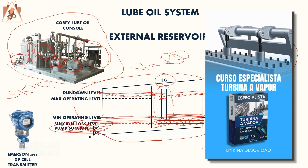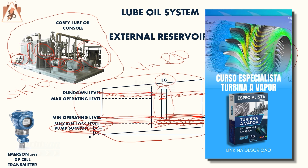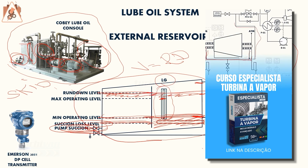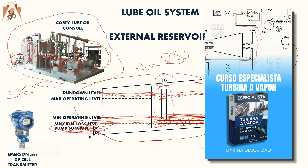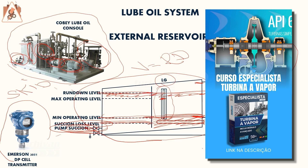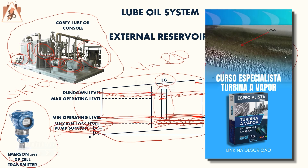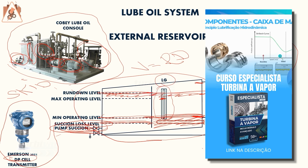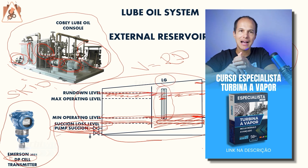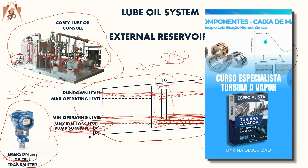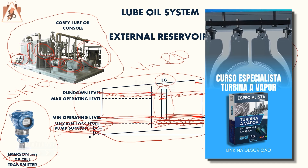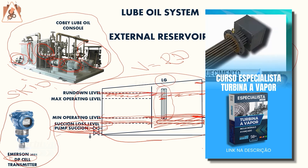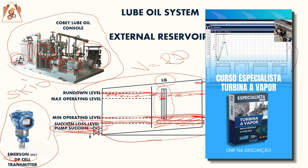For remote level measurement, a level transmitter is used. The pressure difference (delta P) between the top and bottom of the tank generates the level reading. An Emerson DP cell transmitter reads both the high-pressure and low-pressure chambers, computes the difference, and converts it to a level signal. This level is sent to the DCS or PLC and is used as a start permissive for the turbine.